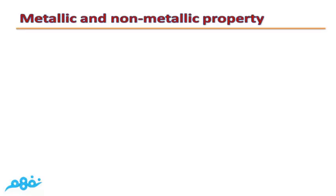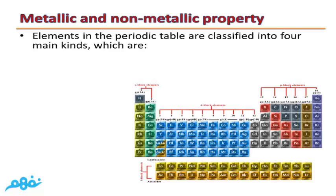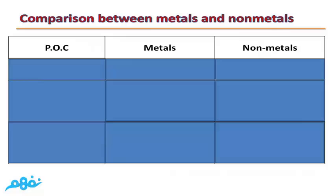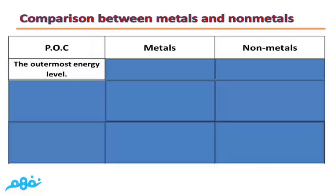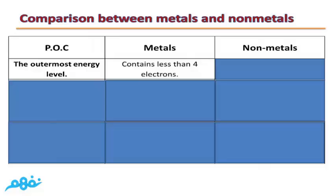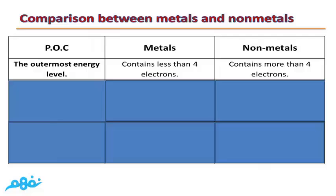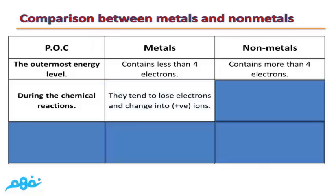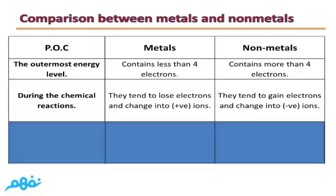Let's talk about the third and final property: metallic and non-metallic properties. Elements in the periodic table are classified into four main kinds: metals, non-metals, metalloids or semi-metals, and noble gases. Comparing metals and non-metals: the outermost energy level in metals contains less than 4 electrons, but in non-metals it contains more than 4 electrons and less than 8 electrons. During chemical reactions, metals tend to lose electrons and become positive ions, while non-metals tend to gain electrons and become negative ions.